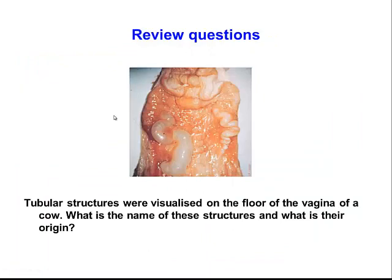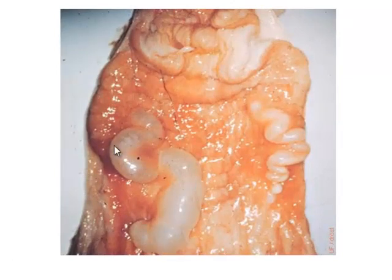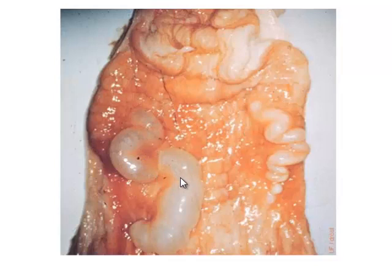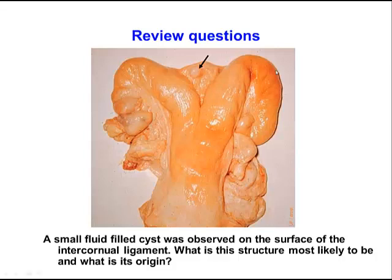Quick review: if you are looking at the anterior vagina of a cow and you see tubule-like structures, these are called Gartner's ducts. They are remnants of the male mesonephric ducts and usually don't cause any problems with fertility. If you find a cyst-like structure located on the intercorneal ligament, this is again a remnant of the male Wolffian or mesonephric duct system. You will occasionally palpate them in the broad ligament, intercorneal ligament, or close to the ovary, and they don't usually cause any problems with fertility.